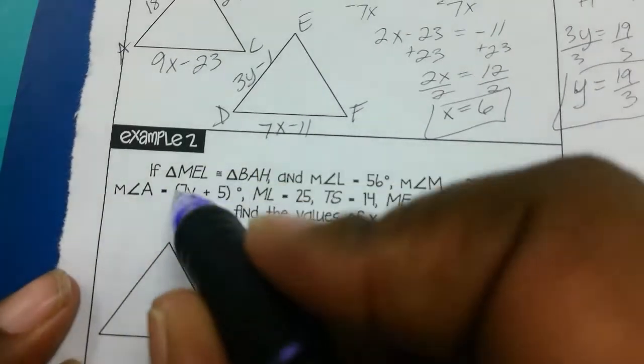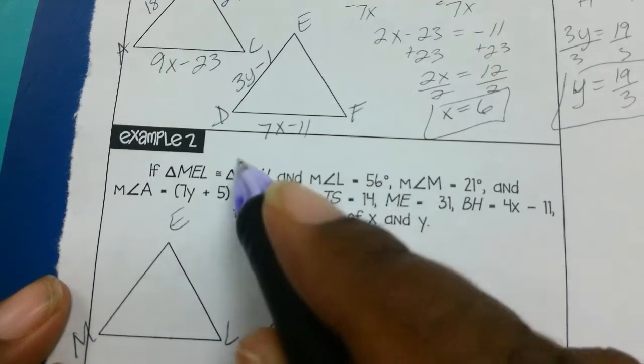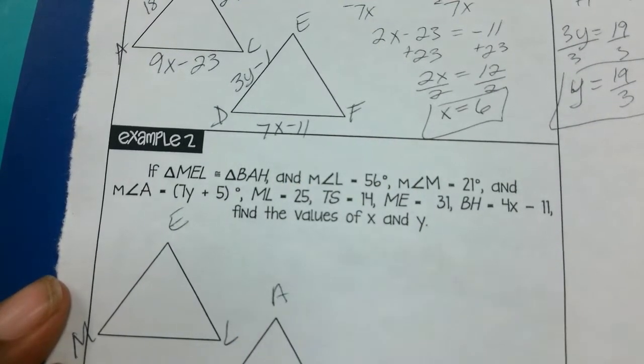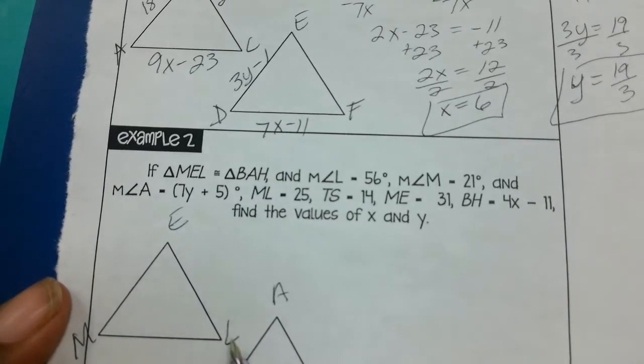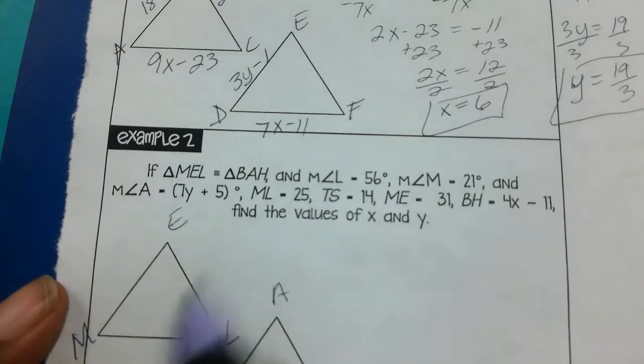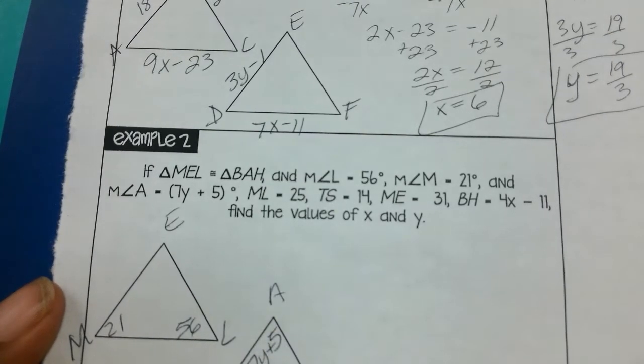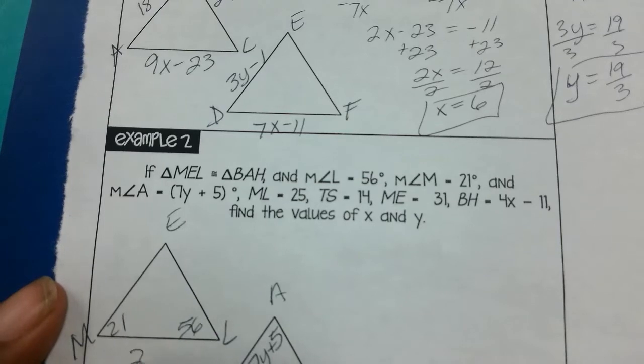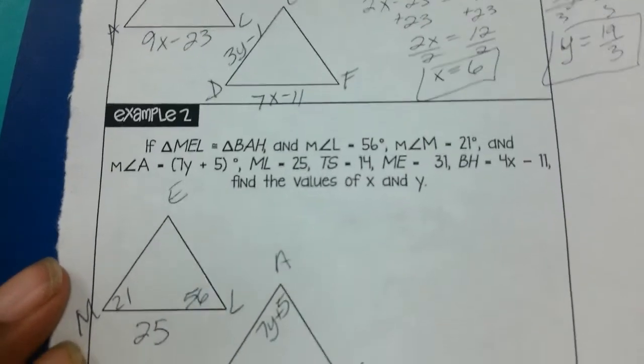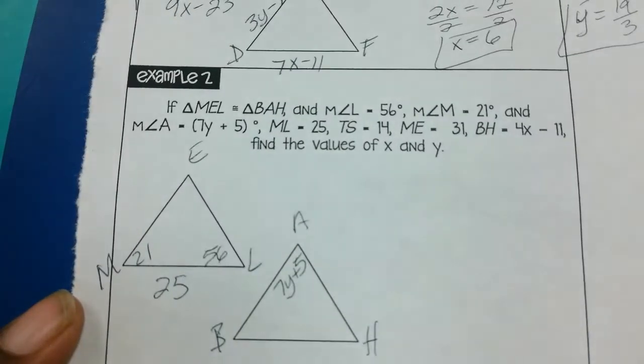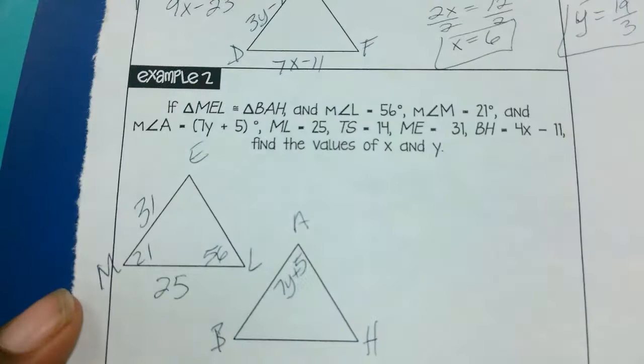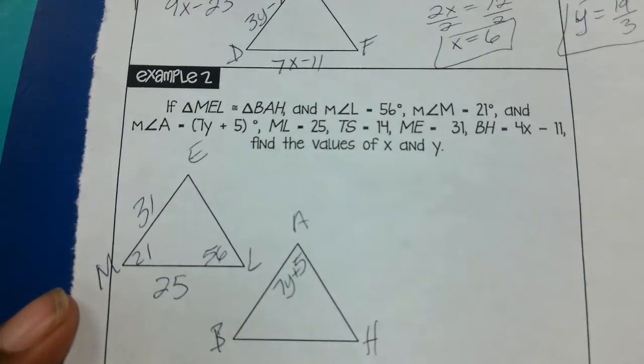Okay, so I'll do the same thing here. They gave me triangle MEL and they said it's congruent to BAH. Again, how they named it is important, so that's why I'm labeling the same way. So again, I can just look and see the corresponding parts. They tell me that the measure of angle L was 56 degrees, the measure of angle M is 21 degrees, the measure of angle A is 7y plus 5. They told me that ML is equal to 25, TS is equal to 14—that means nothing to me because I don't have a TS on here. ME is equal to 31.